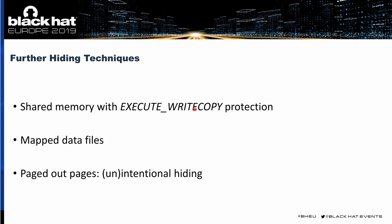Another scenario involves mapped files. We can simply map a data file — a text file, a font file, whatever — into the memory space as a data file so we can access it in memory. Then, also with the execute-write-copy protection, wipe out all the original content, put malicious code in there, and the investigator might not look closely at this memory area because it's a mapped file. It's not anonymous memory with execute-read-write.